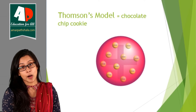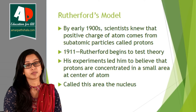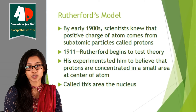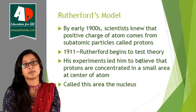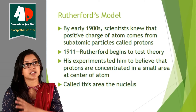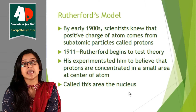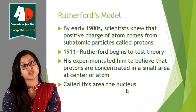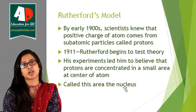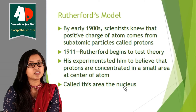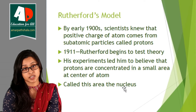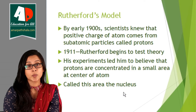Thomson's model was proven wrong by Ernest Rutherford. By the early 1900s, scientists knew that the positive charges of atoms were due to a subatomic particle known as the proton. In 1911, Ernest Rutherford began to test this theory. His experiments led him to believe that the positive charges of atoms are not spread everywhere as proposed in Thomson's model. He said the positive charges are instead concentrated in the center, and he called this center the nucleus.